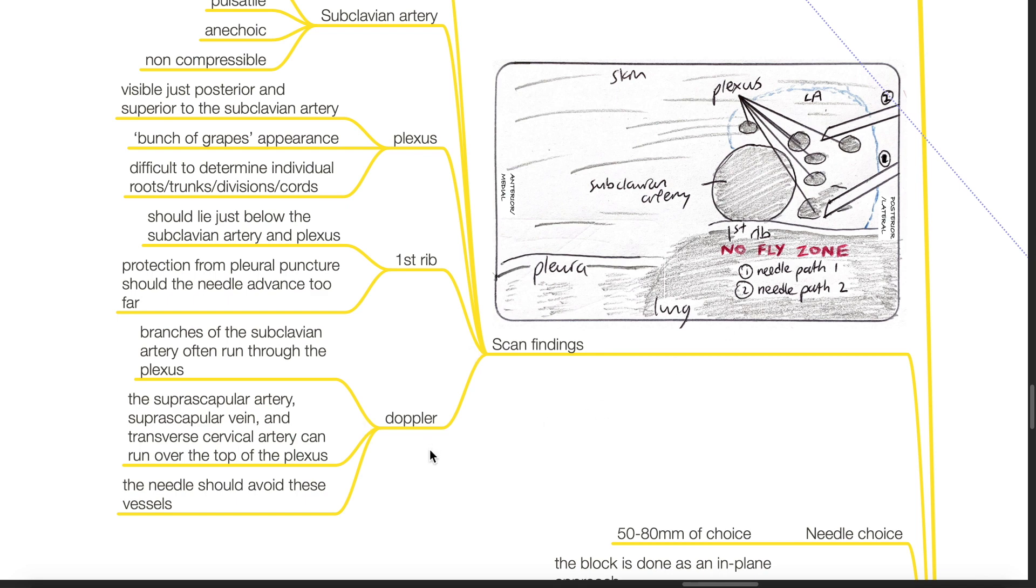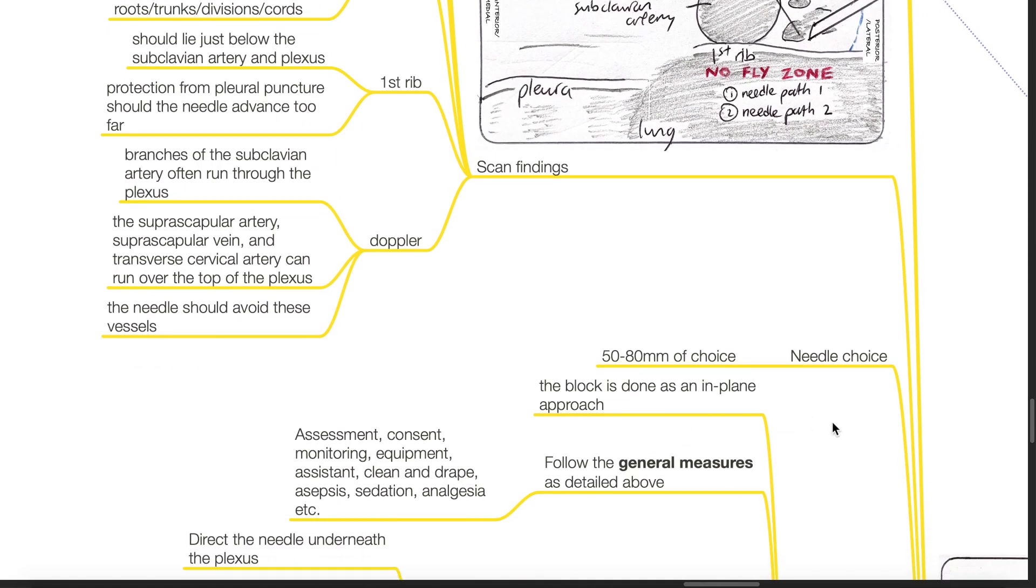Doppler ultrasound: branches of the subclavian artery often run through the plexus. The suprascapular artery, suprascapular vein, and transverse cervical artery can run over the top of the plexus. The needle should avoid these vessels. Needle choice: 50 to 80 mm of choice.